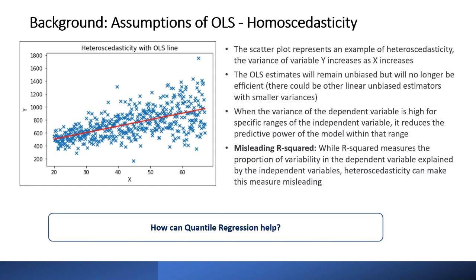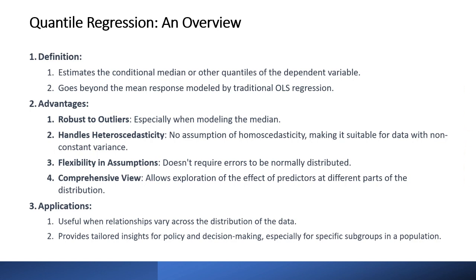How can quantile regression help when the homoscedasticity assumption is violated? Quantile regression estimates the conditional median or other quantiles of the dependent variable, going beyond the mean response modeled by OLS. Its advantages include robustness to outliers especially when modeling the median, handling of heteroscedasticity with no assumption of constant variance, flexibility since it doesn't require normally distributed errors, and a comprehensive view allowing exploration of predictor effects at different parts of the distribution. It's useful when relationships vary across the distribution and provides tailored insights for policy and decision making.